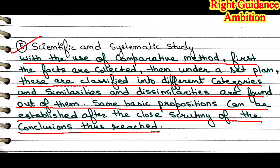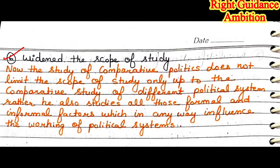Last point — widening the scope of study. The study of comparative politics does not limit its scope only to the comparative study of different political systems; it also studies all formal and informal factors which influence the working of a political system. Today comparative method has been greatly widened. We now study not only political institutions like legislature, executive, and judiciary, but also informal factors such as caste, religion, race, literacy level, and living standards of the people that affect the political system.